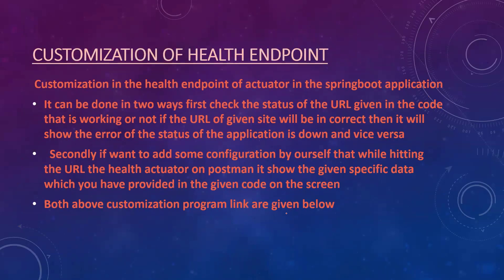Customization of the health endpoint can be done in two ways. First, check the status of a URL in code — if the URL is returning correctly, the status is up; otherwise, the application status is down. Second, by adding some configuration ourselves so that when hitting the health actuator URL on Postman, it shows specific data provided in the code. Both customization examples are linked below.